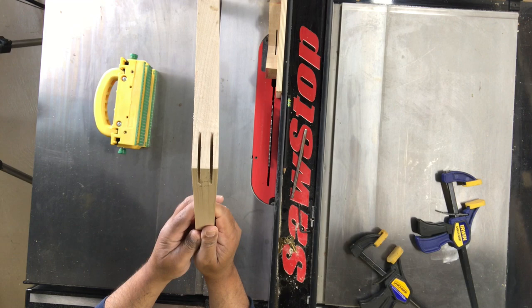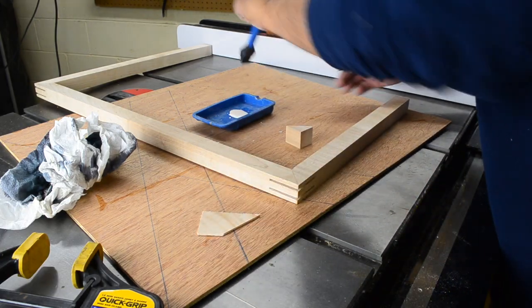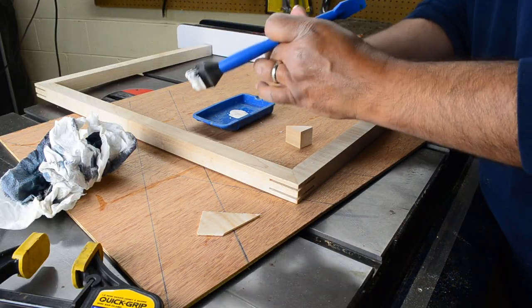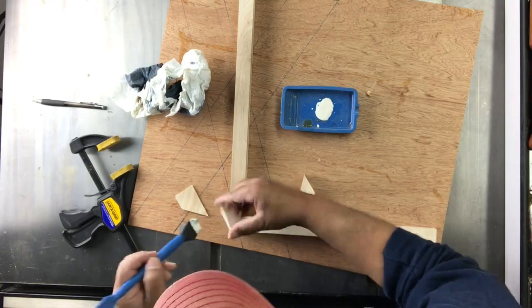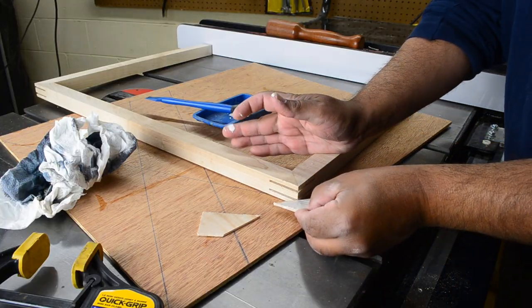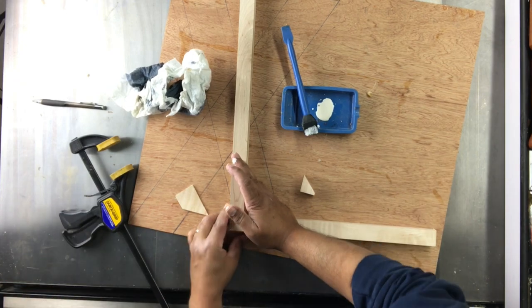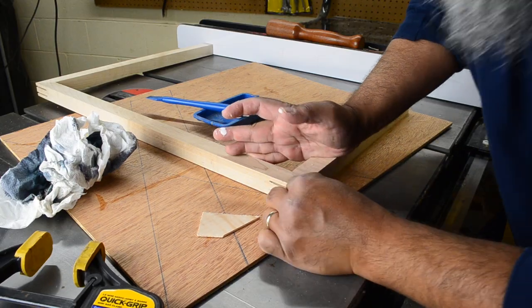Using more scrap stock that's been thicknessed to match the slots, I pre-cut them to a little larger than needed, apply a generous amount of glue to both faces, and then press them into position.